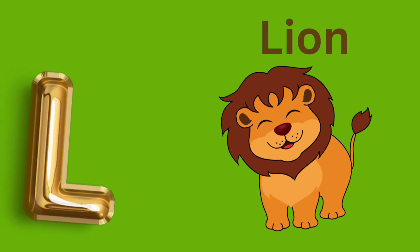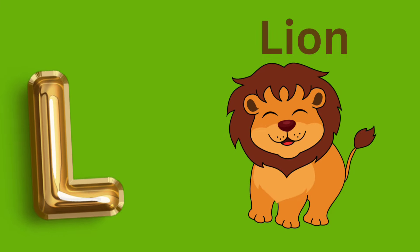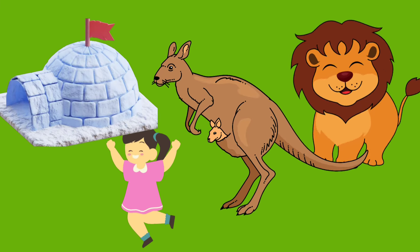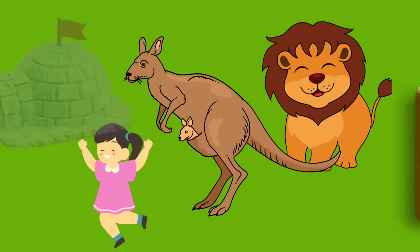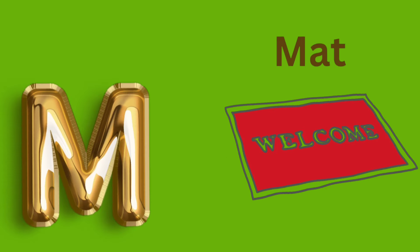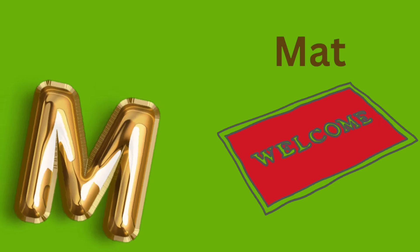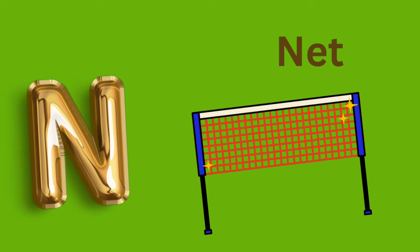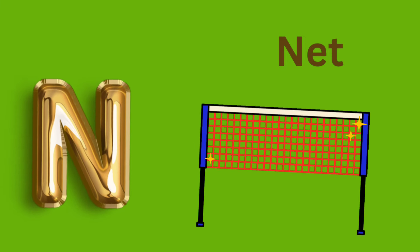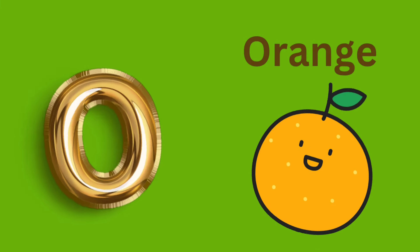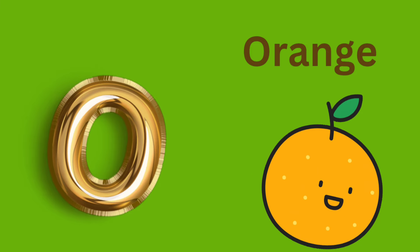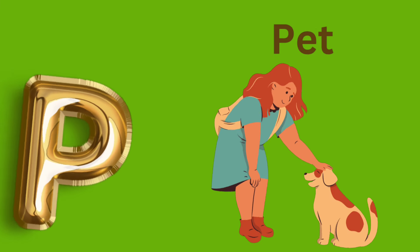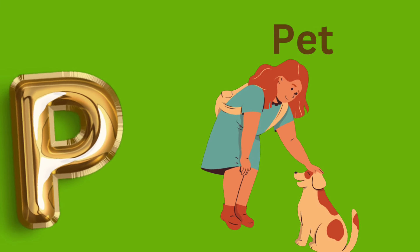L is for Lion, L, L, lion. M is for Mat, M, M, mat. N is for Net, N, N, net. O is for Orange, O, O, orange. P is for Pet, P, P, pet.